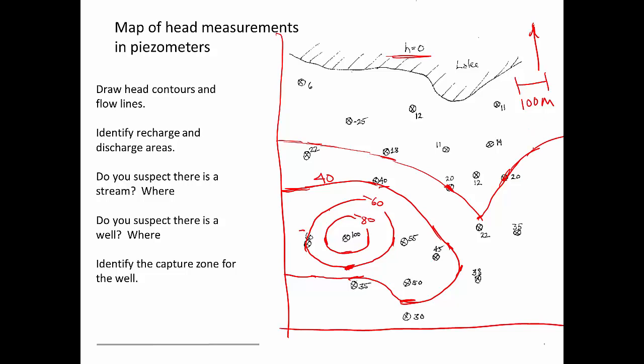Okay, so there's 20. And then zero is going to be right here. The edge of this lake is going to be our zero head contour. Okay, so that's the first cut.